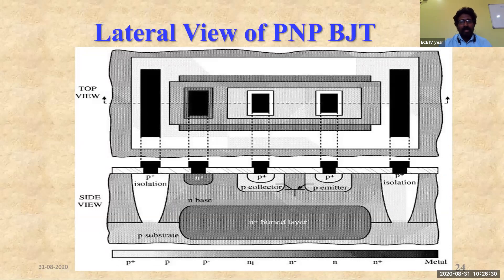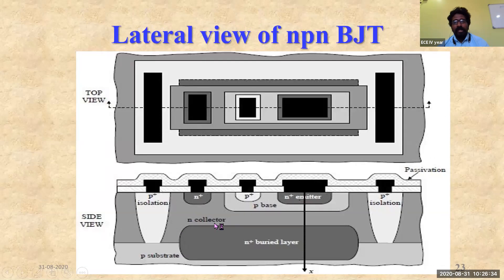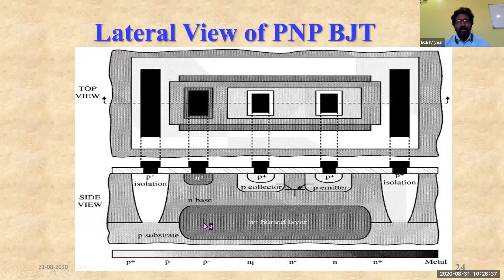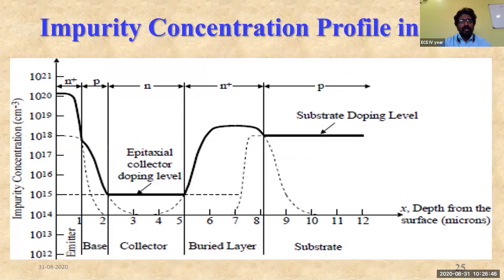In the NPN BJT you have a P-base, N+ emitter, and N collector. In the PNP BJT you have an N-base, P collector, and P emitter. Now let us discuss the impurity concentration profile of the BJT.